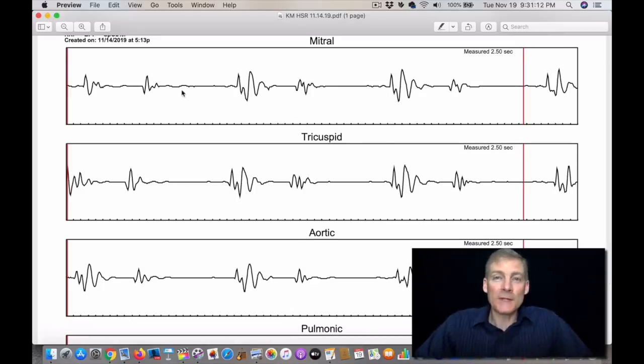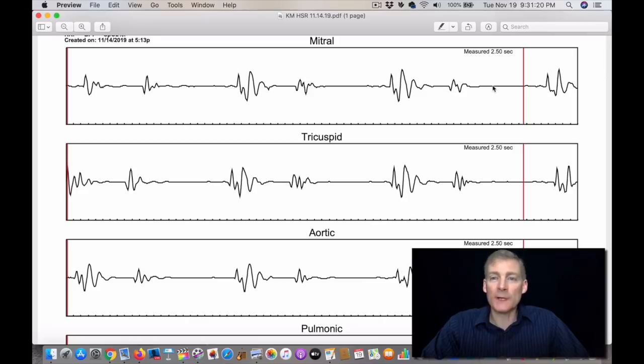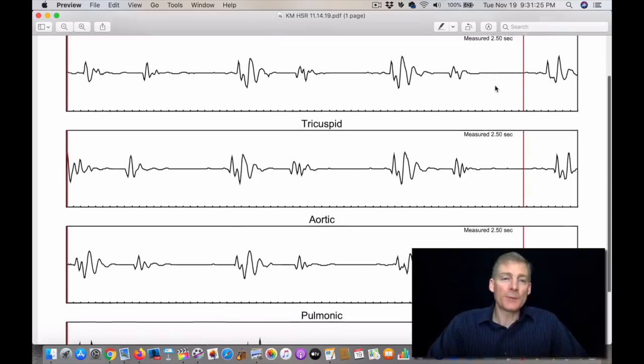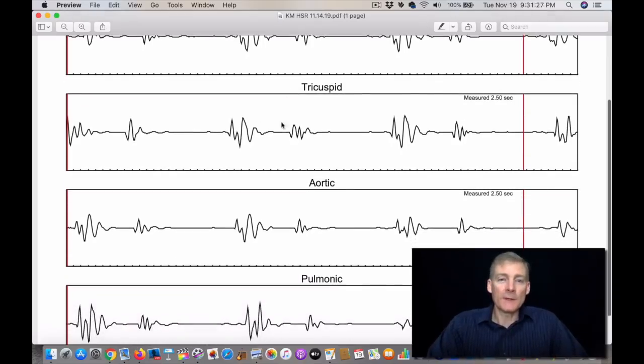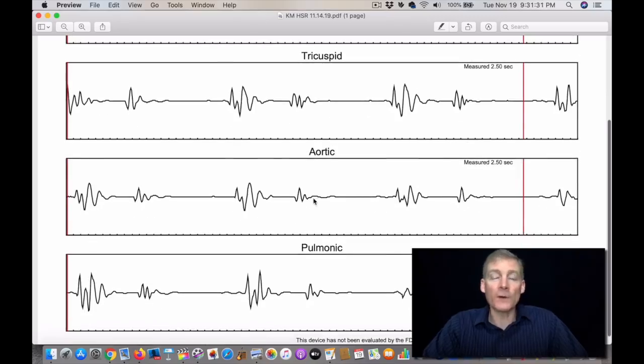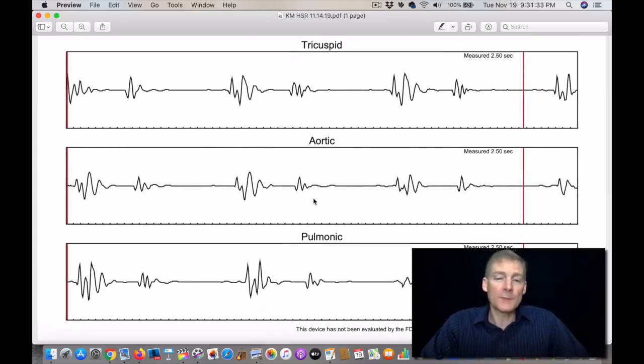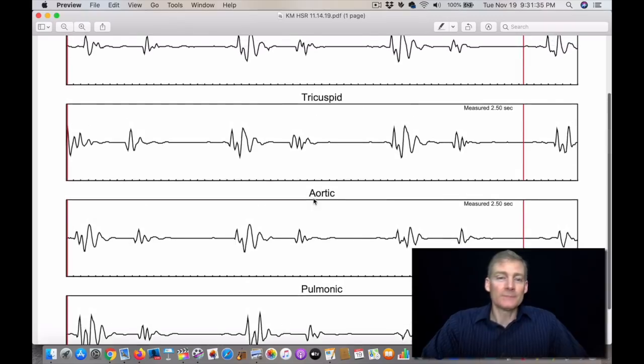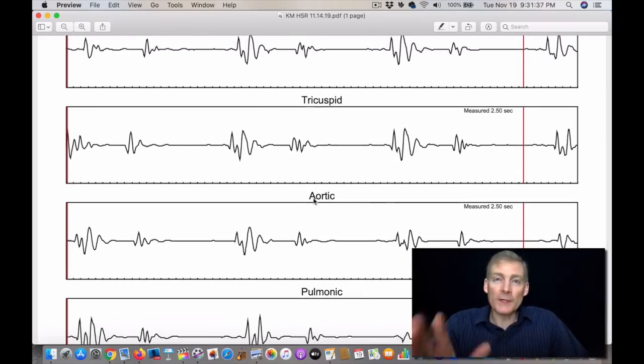Three months later, it looks like this. This is November 14th, 2019. Look, it's beautiful. Here's lub, space, dub, rest, lub, space, dub, rest. There's no missing cycles. And the dub is present. Here we go. Love, space, dub, rest, lub, space, dub, rest. For all four valves, the dub is present. So there's a lot of improvement here in three months.